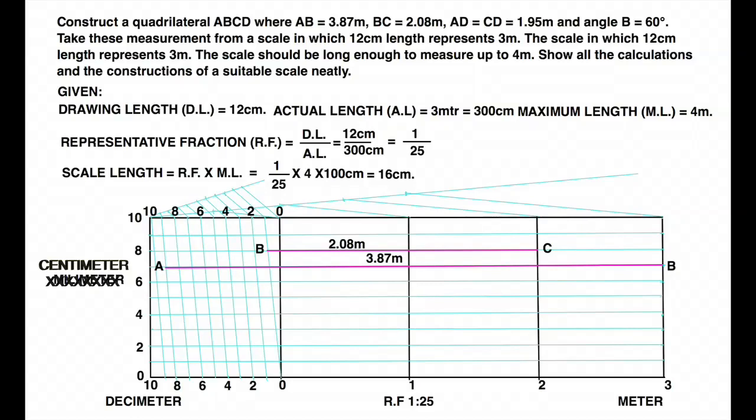Now we have to mark AD and CD. So that is 1.95. So I will take 1, 9 and the line joining 9 to 5. On that I will go 5 up. So that is 1.95.